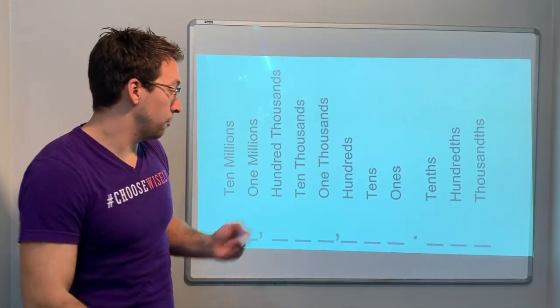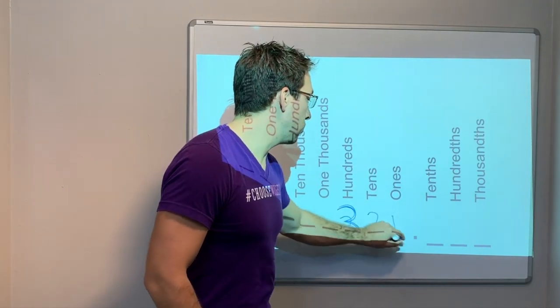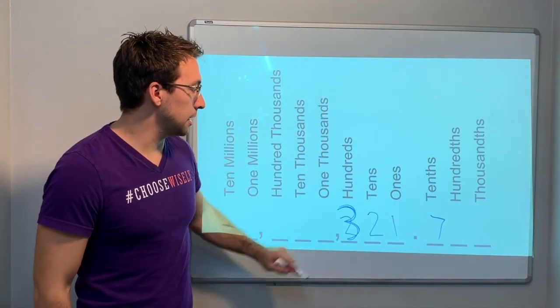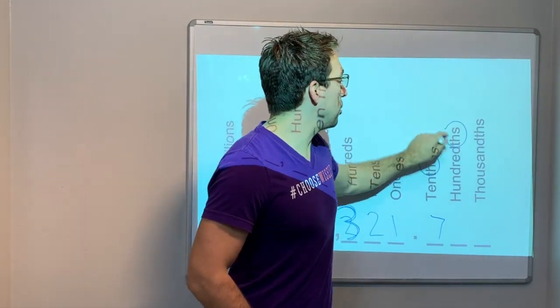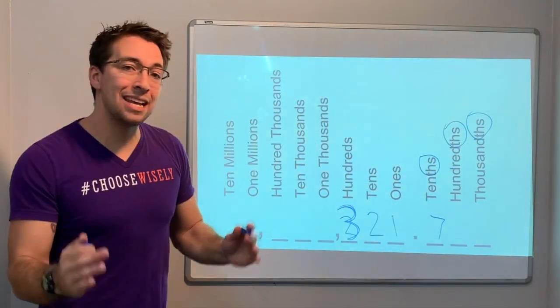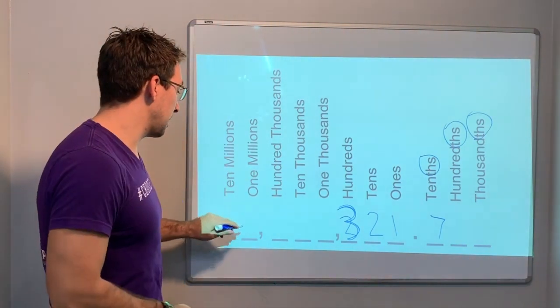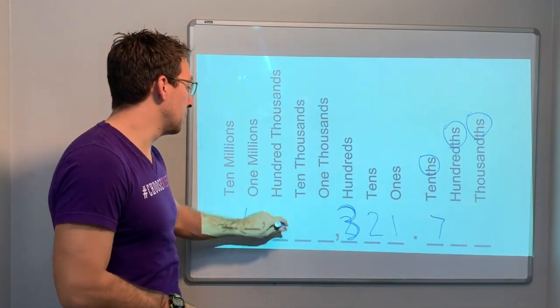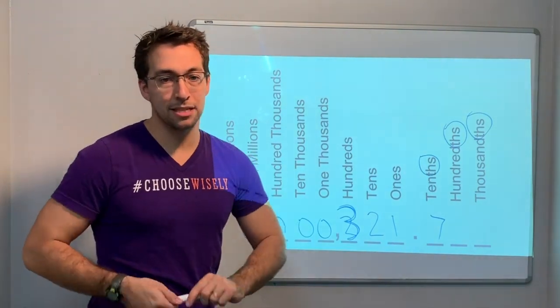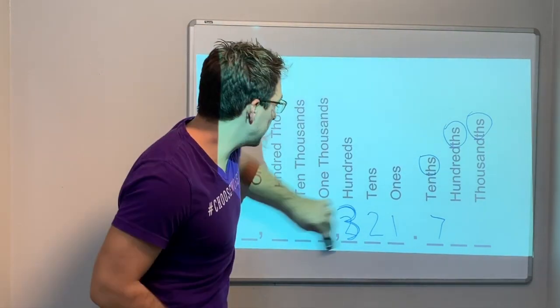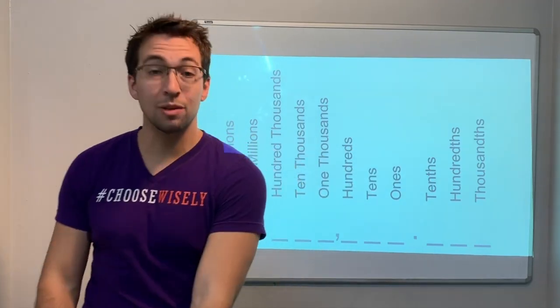Here it is. We have that number earlier: three hundred twenty-one point seven. This is the hundreds place, the tens, the ones, the tenths. Notice that your decimals always end with THS: tenths, hundredths, thousandths. Crucial: we always read the decimal as AND. The decimal equals AND.